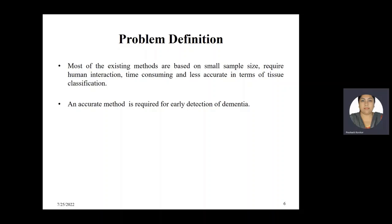Based on the literature review, we can infer that most of the existing methods are based on small sample size, require human interaction, are time consuming, and are less accurate in terms of tissue classification. Hence, an accurate method is required for early detection of dementia.